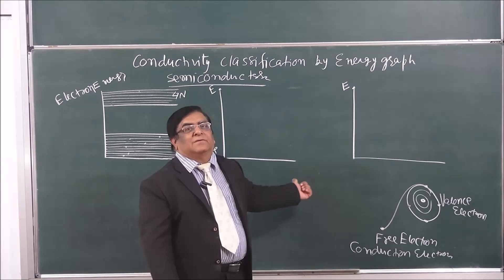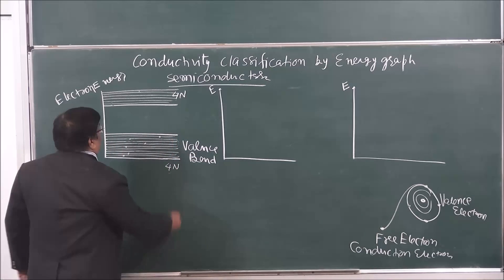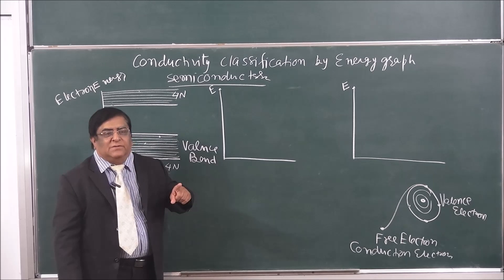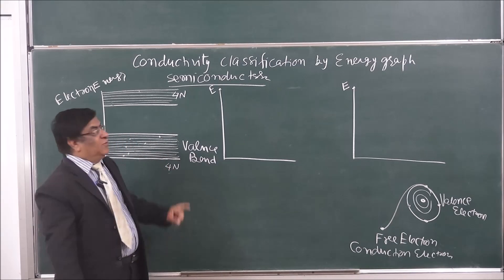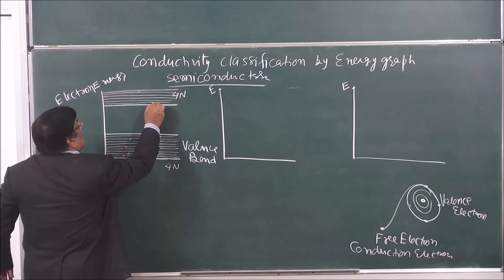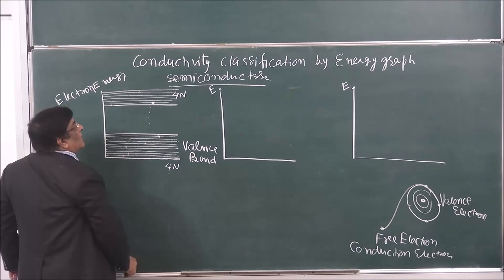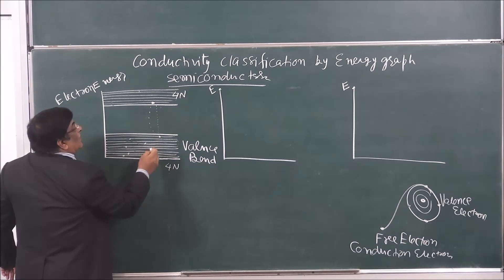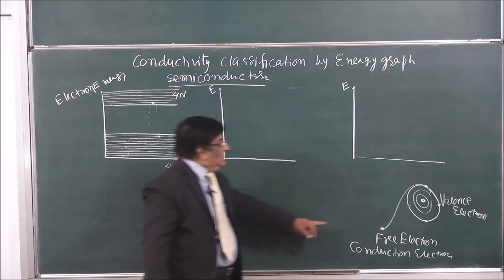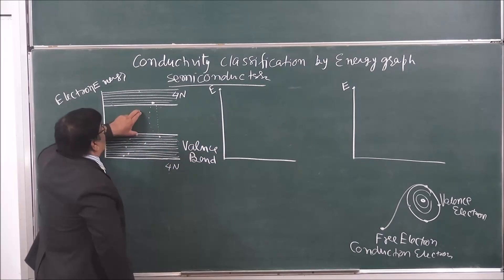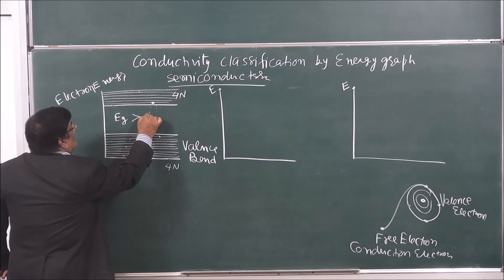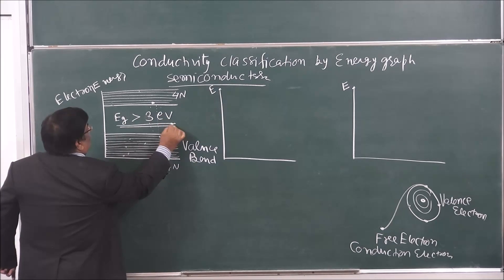If we want to give energy to an electron in an insulator so that it can conduct, it must cross the energy gap between the valence band and the conduction band. The difference in energy between these two bands is shown by this gap. In insulators, this energy gap is larger than 3 electron volts.